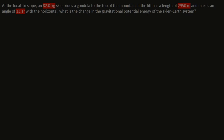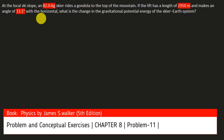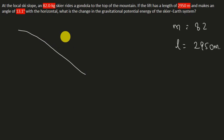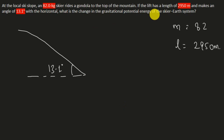The next question involves a skier of mass 82 kg climbing a mountain. The length along the slope is given as 2950 meters. The slope makes an angle of 13.1 degrees with the horizontal. We need to find the change in potential energy of the skier-earth system.